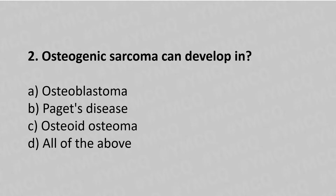Now let's move to question number 2. Osteogenic sarcoma can develop in — option A: osteoblastoma, option B: Paget's disease, option C: osteoid osteoma, option D: all of the above. The answer is option B: Paget's disease.